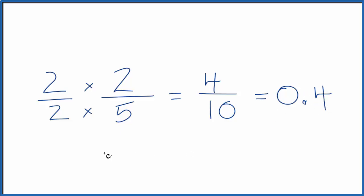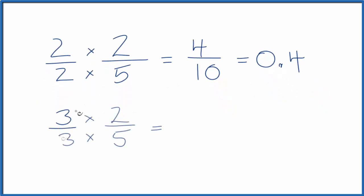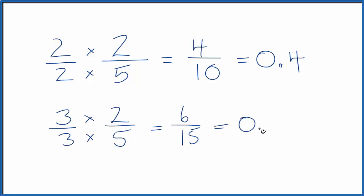Let's do another one. How about multiplying by three over three? Three over three is equivalent to one. Three times two is six, and three times five is fifteen. That gives us another equivalent fraction: six over fifteen, which equals the decimal 0.4 — the same as two-fifths and four-tenths.